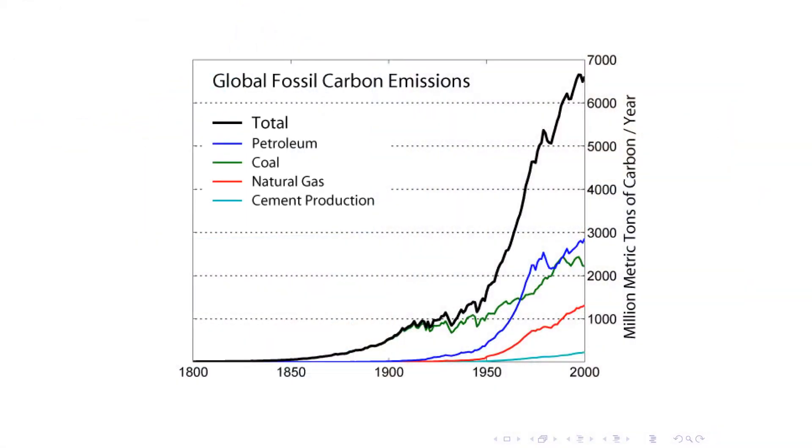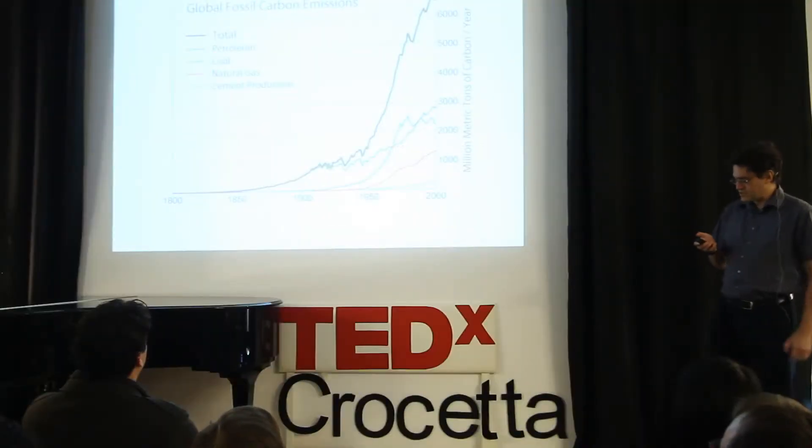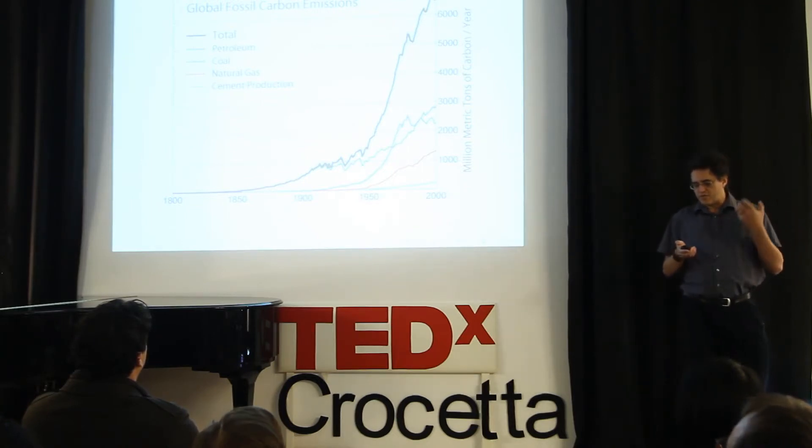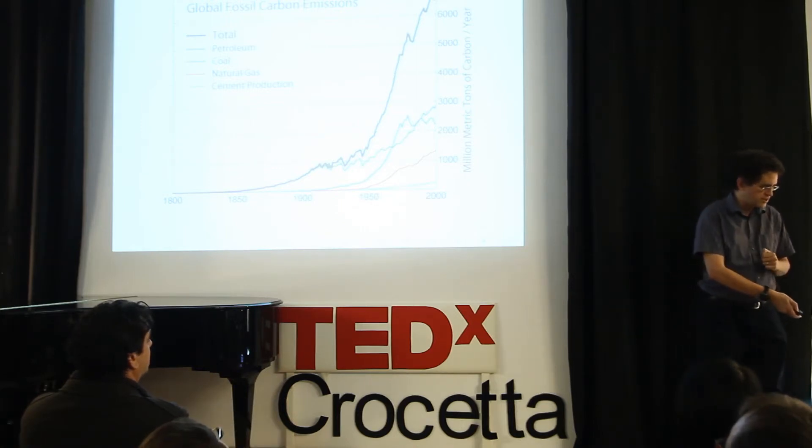Starting in 1800 and going on until now, we burnt first more coal, then more oil, then more natural gas. This has been shooting up dramatically, and it's really an energy civilization that we are in right now. We're in a civilization where everything is based on the use of more and more energy.